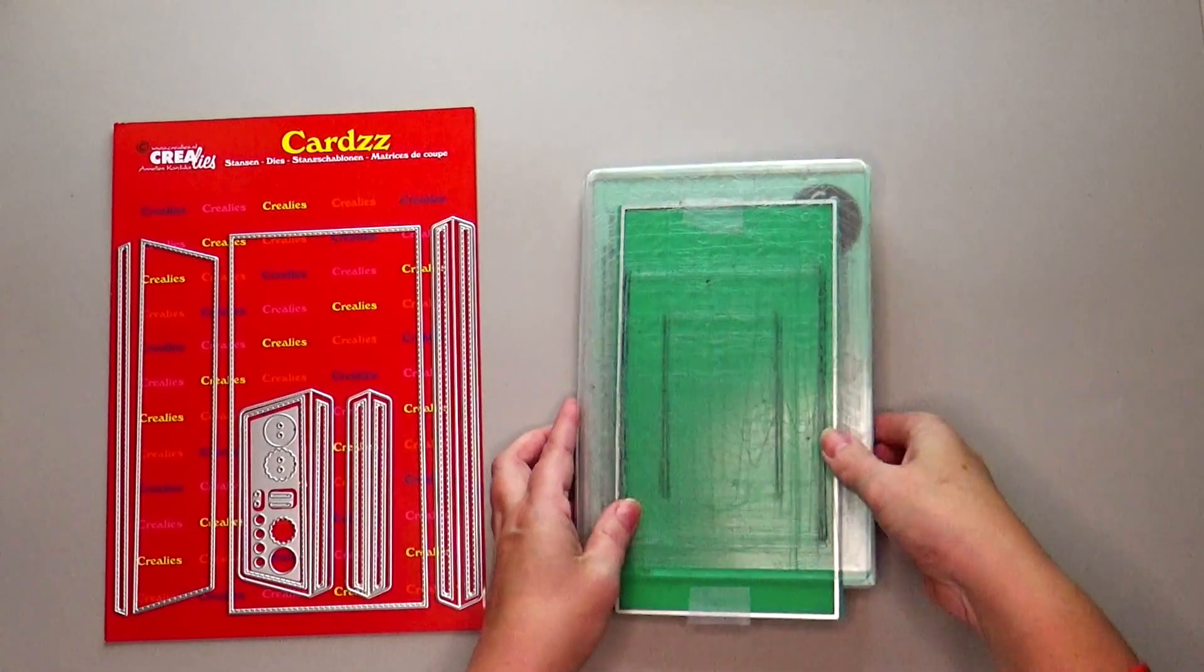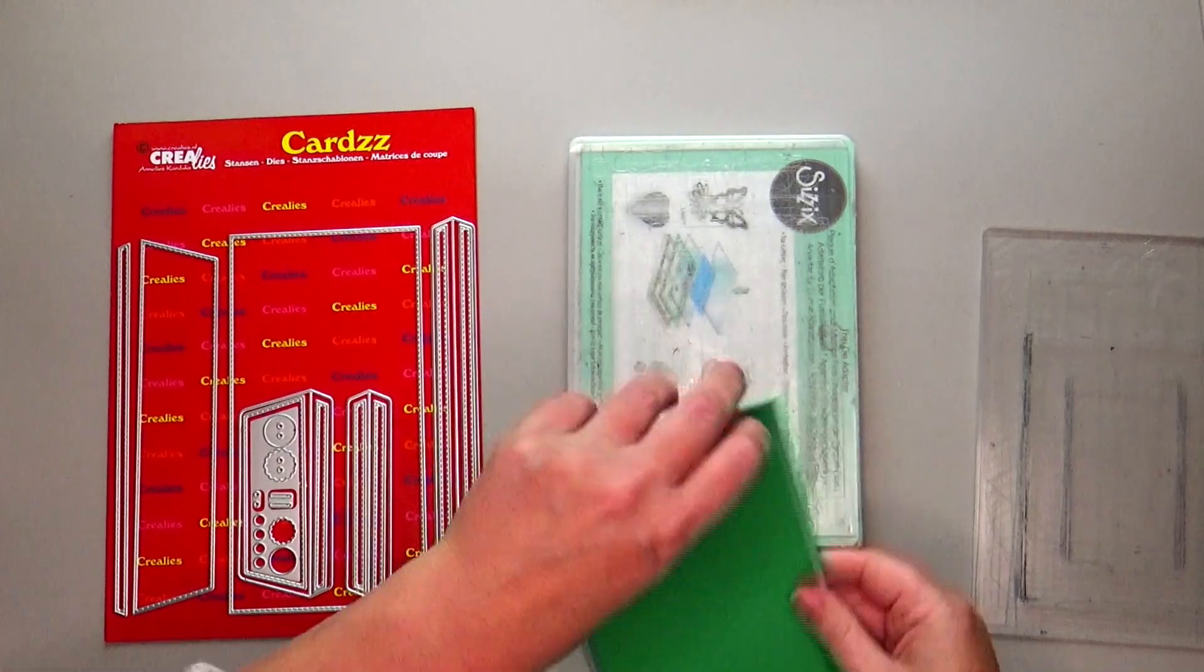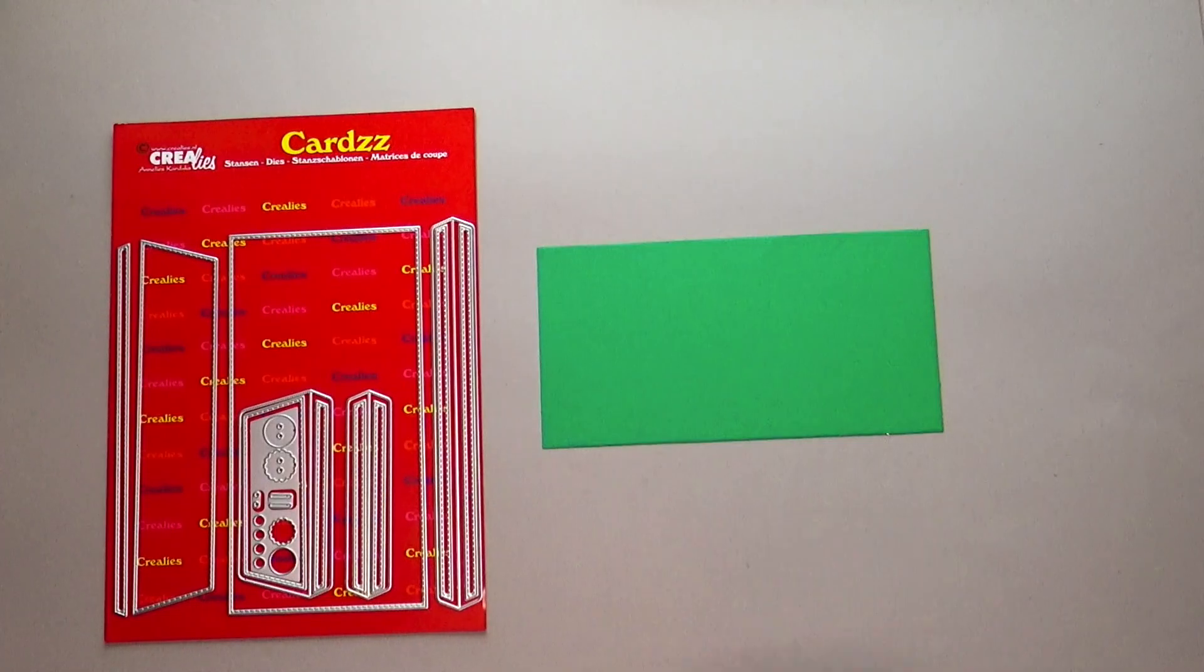Cards number 199 has a large base die. When the base plate of your die cutting machine is shorter than the base die, you will have to die cut the die twice, as I show here.